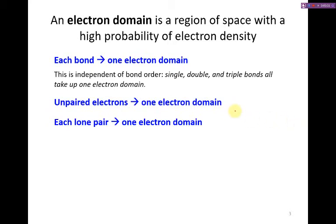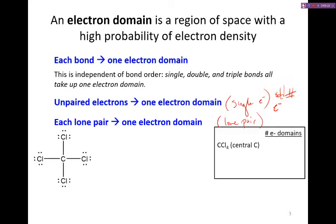To clarify: a single unpaired electron or a lone pair both represent an electron domain. This single-electron case comes into play with exceptions to the octet rule or odd numbers of electrons. So for carbon tetrachloride, the carbon has four domains, one for each bond. A given chlorine atom also has four electron domains: three lone pairs and one bonded pair.